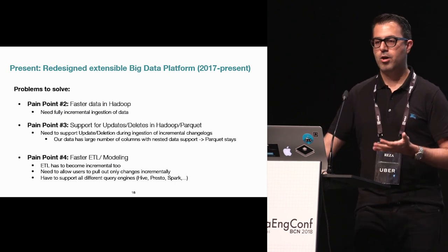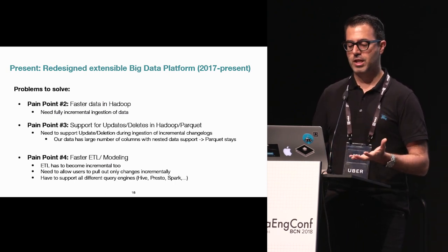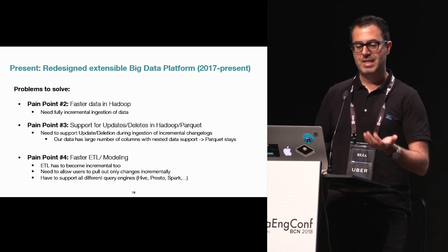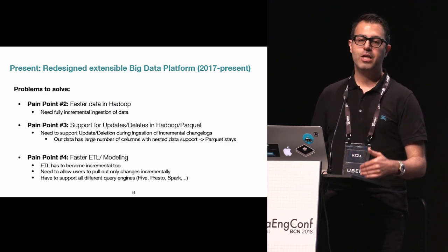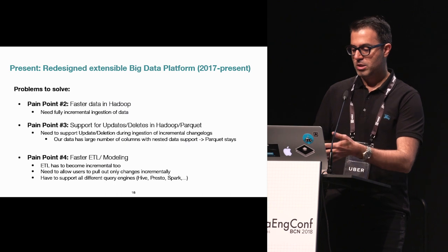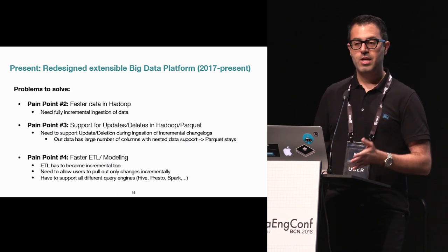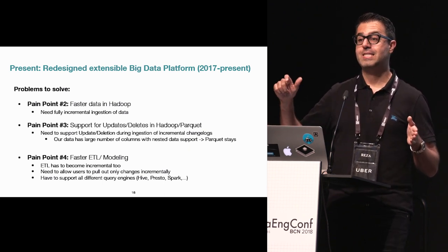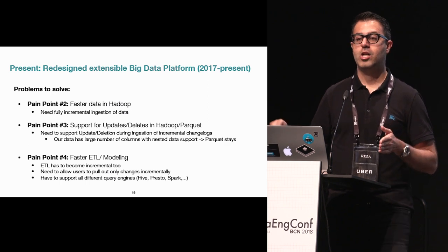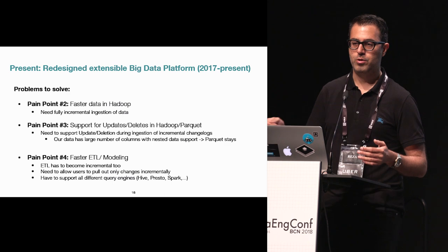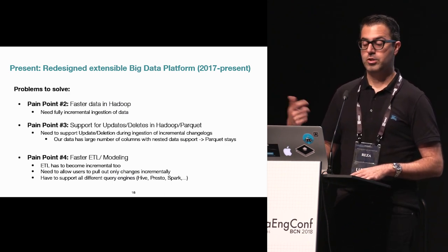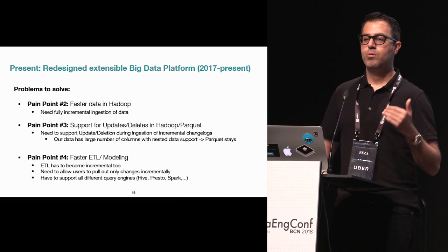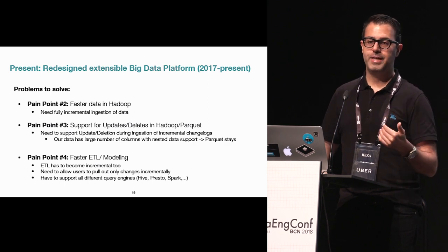The second problem was all our use cases need fresh data, and our datasets have a lot of updates and deletes that we needed to handle within HDFS on top of Parquet. We get this question a lot: why not replace Parquet? But our dataset is extremely large with five or six levels of nesting — there's no way to bypass columnar file formats. Any replacement would have the same update and delete challenges. Finally, we had to move from snapshot-based to incremental ETL.